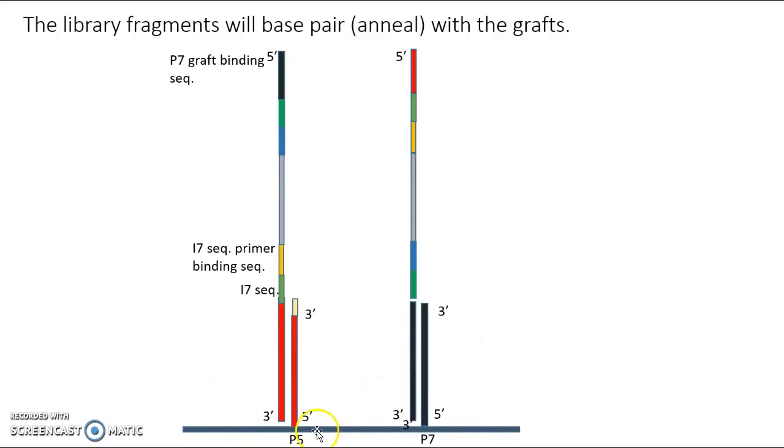So here's the surface that's a flow cell on the flow cell. Here are the little grafts, grafts or oligos, the P7 and the P5 that hook up off the surface. And then here is a single strand and then the other strand from one fragment from our library. So, now what?